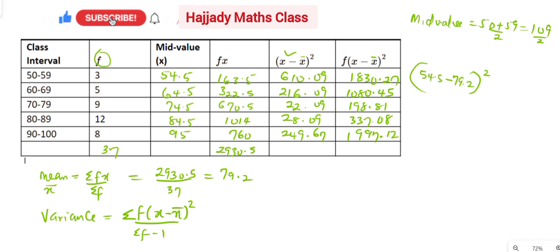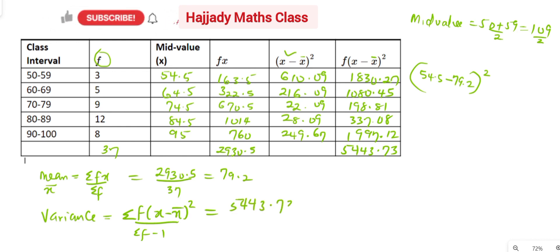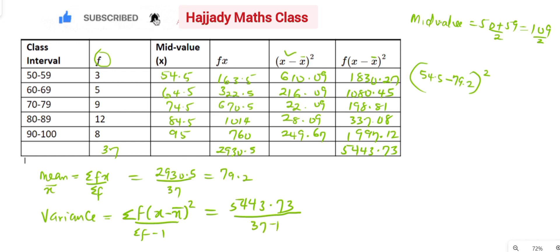The summation of everything gives 5,443.73. You can use the calculator for that. So calculating the variance: the summation of f times (x minus x̄)² is 5,443.73, all over summation f which is 37, minus 1 — that is, over 36. Dividing this gives a variance of 151.2.